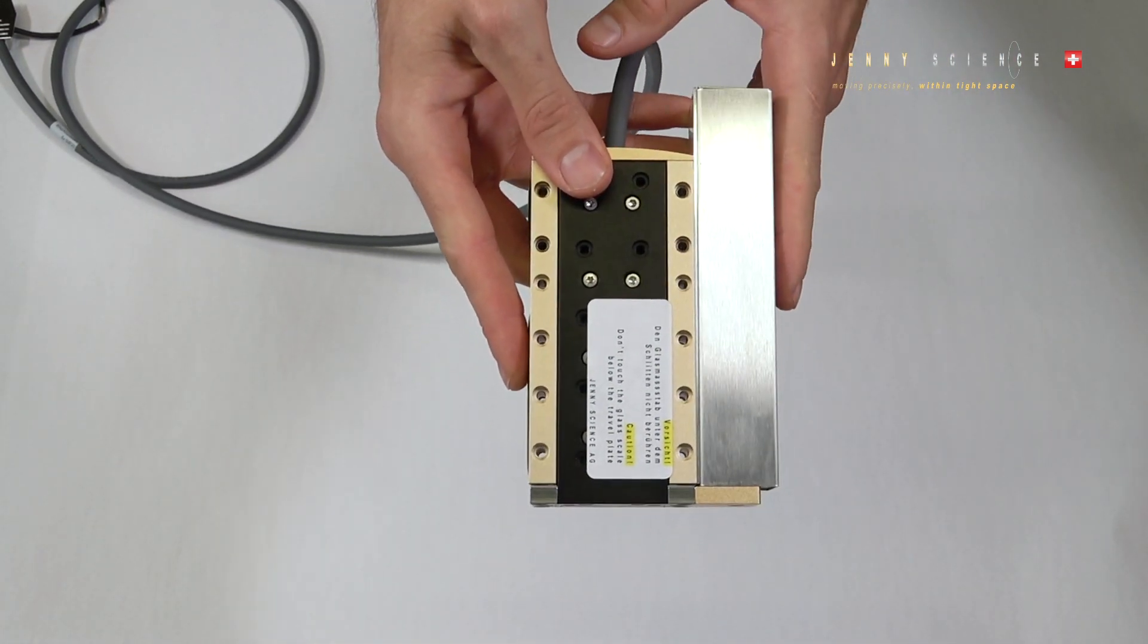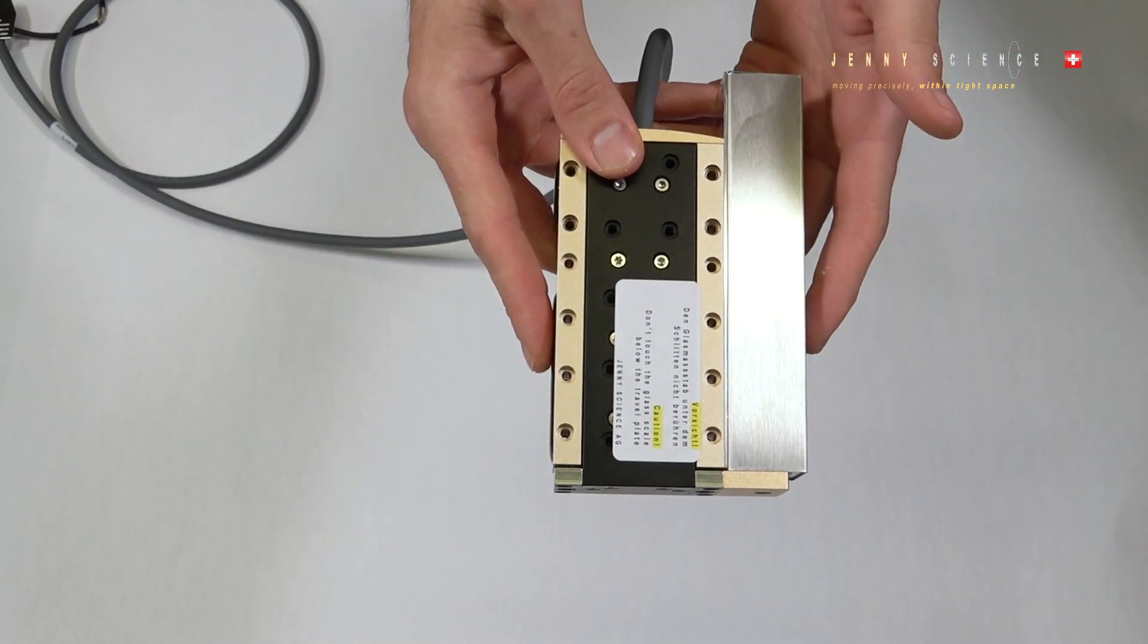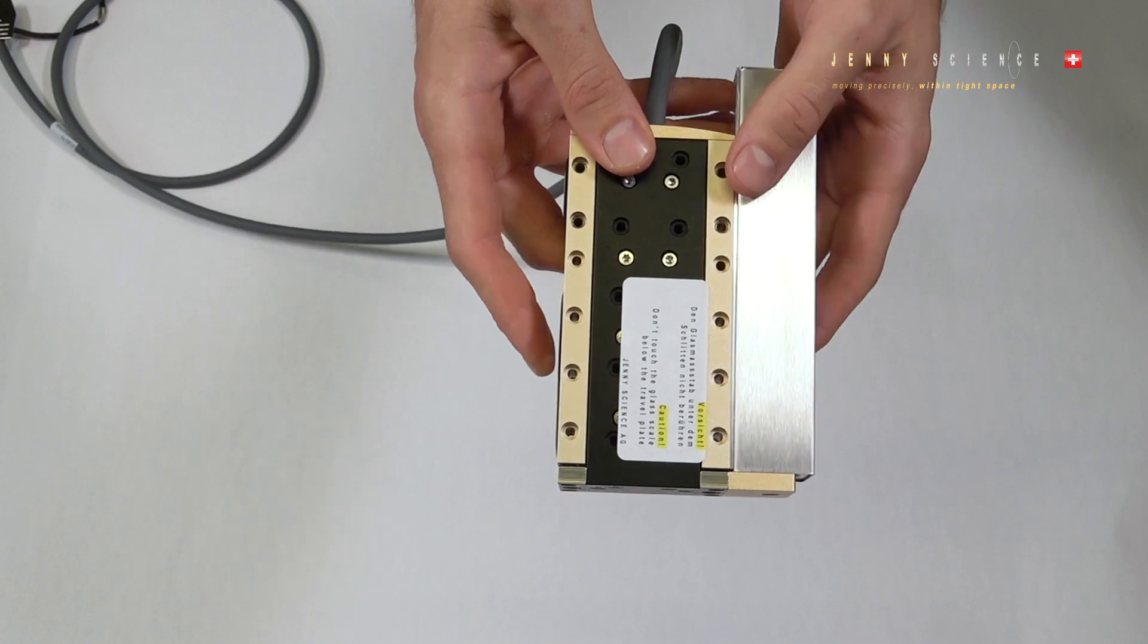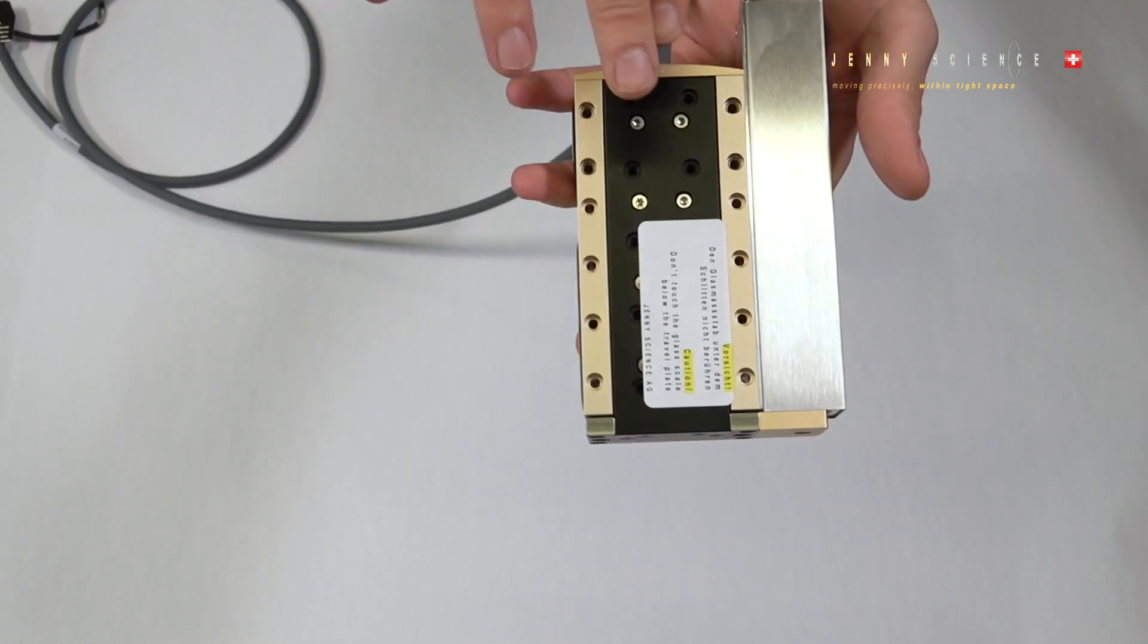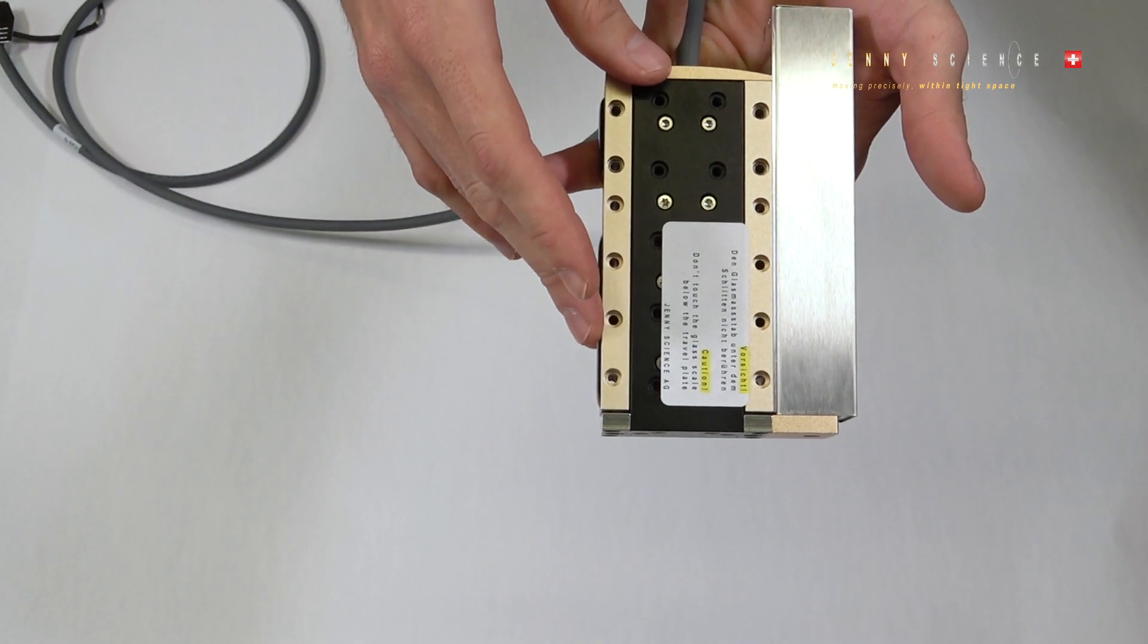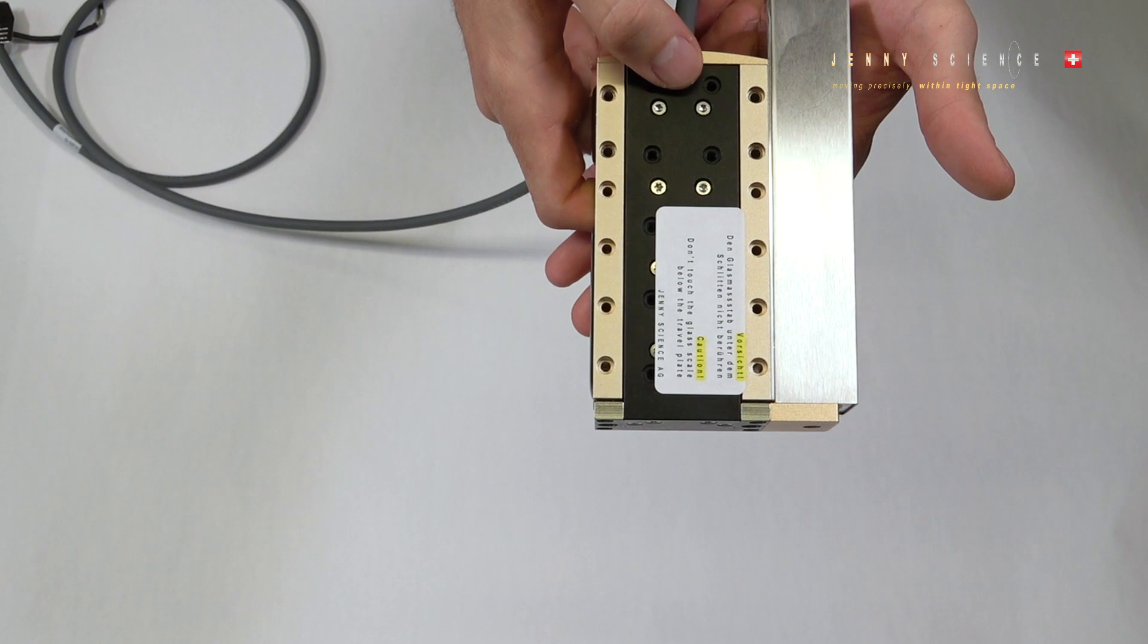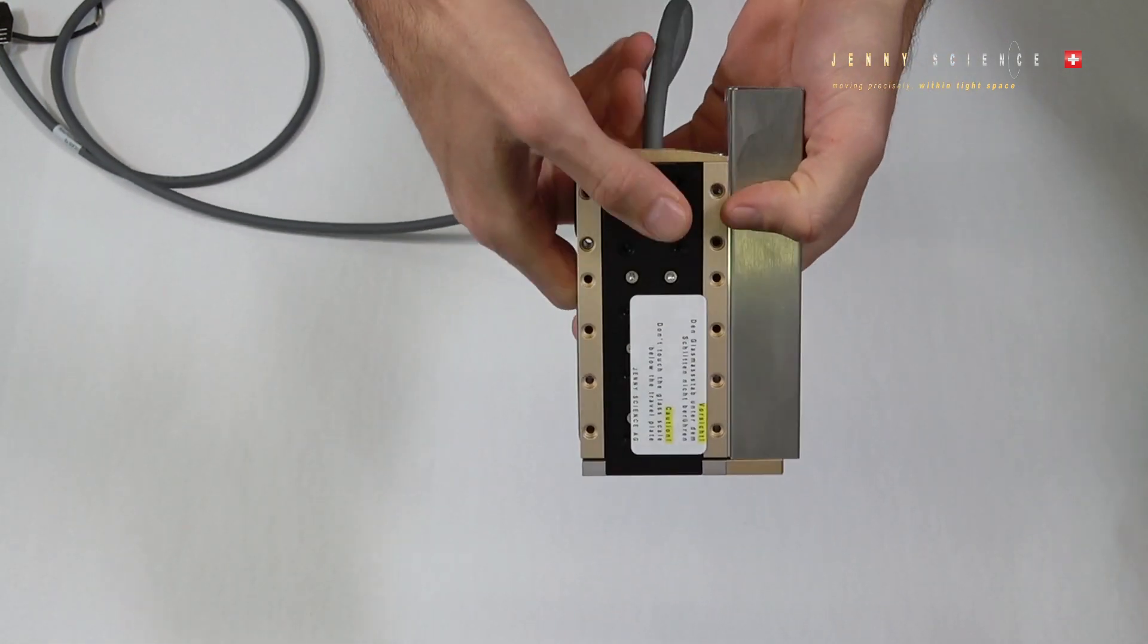Here on the left side we see the weight compensation which is important if you are using the axis vertically. It has two tasks. First of all it compensates the weight so the motor won't use its whole power for the weight and also if the power supply shuts off the motor won't fall down, it will go back up.